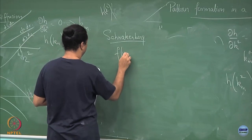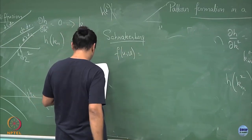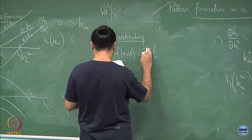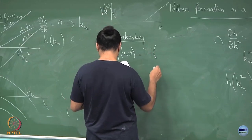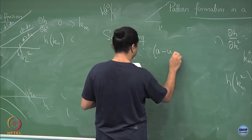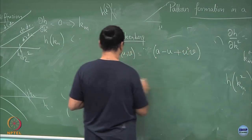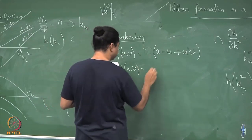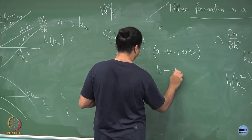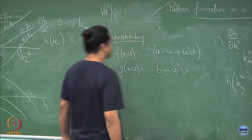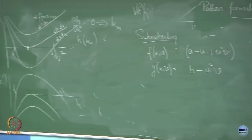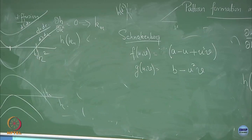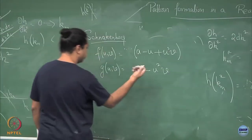For Schnakenberg, f(u,v) is, I'm writing gamma outside, so is a minus u plus u square v, and g(u,v) is some b minus u square v. This is the f and g.